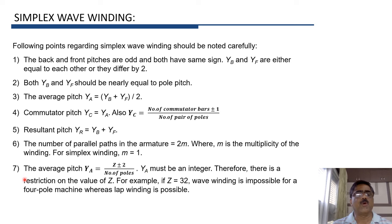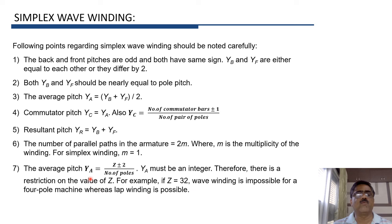One more important point: in case of simplex wave winding, the average pitch YA = (Z ± 2) / P, and YA must be an integer — only then is the winding possible. For example, if Z = 32 and poles = 4, then YA = (32 ± 2) / 4, which is not an integer. Therefore, wave winding is impossible with 32 conductors and 4 poles.